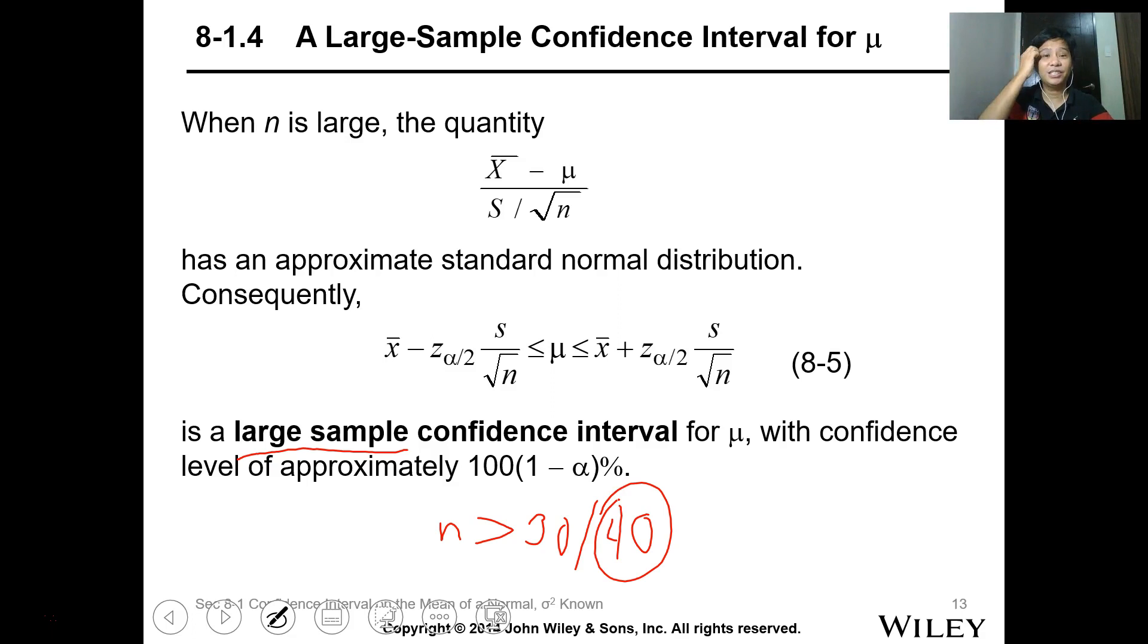If n is large, the quantity x bar minus mu over s over square root n approximates the standard normal distribution. So when the sample size increases, the sampling distribution approaches the normal distribution.